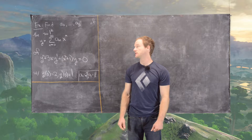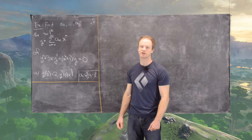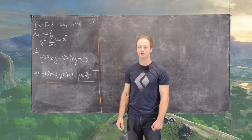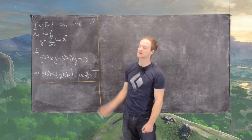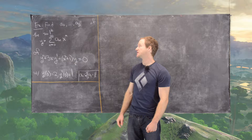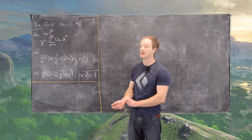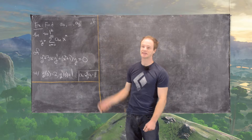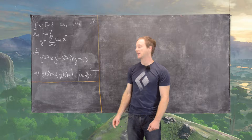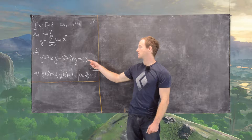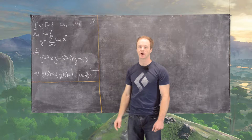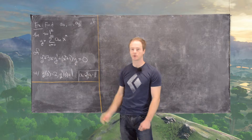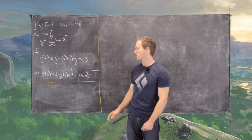In this video we're going to do a series solution for a differential equation. We're going to find the recursion on all the coefficients of the series, and then we're going to explicitly calculate the coefficients a0 through a5 — the first six — and we're taking a series based at x equals 0. The differential equation is y double prime plus 3x y prime plus (x squared plus 1) y equals 0.